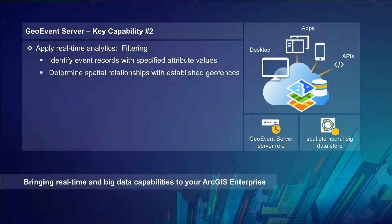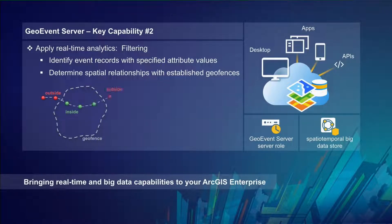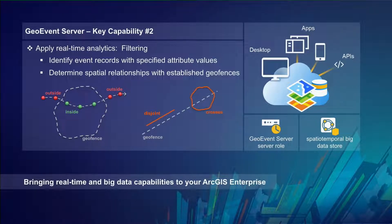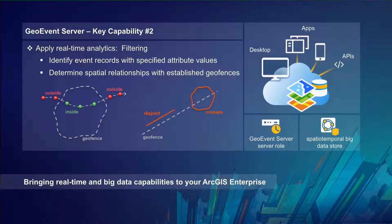We can also determine the spatial relationship that an event's geometry has with an established GeoFence. We tend to think of GeoFences as polygons — testing whether a point is inside or outside. But GeoFences don't have to be areas; they can be any geometry: point, line, or polygon. GeoEvent Server supports all spatial relationships of the Java Geometry API — tests such as disjoint, crosses, and intersects.